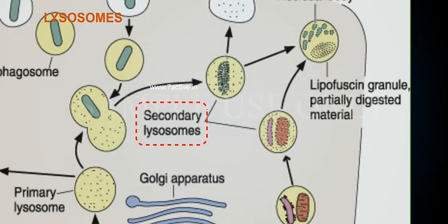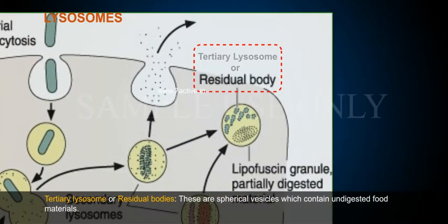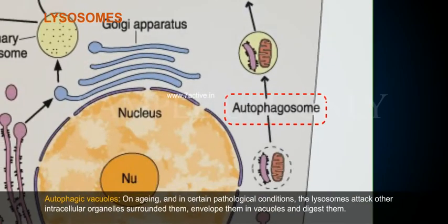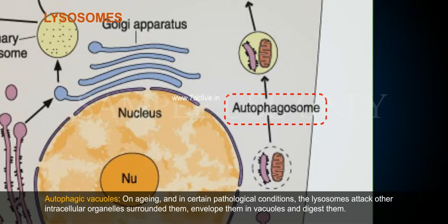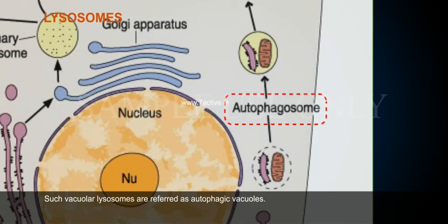2. Secondary Lysosomes: These are spherical vesicles which show the presence of digestive food molecules. 3. Tertiary Lysosomes (Residual Bodies): These are spherical vesicles which contain undigested food materials. 4. Autophagic Vacuoles: On aging and in certain pathological conditions, lysosomes attack other intracellular organelles, surround them, envelop them in vacuoles, and digest them. Such vacuolar lysosomes are referred to as autophagic vacuoles.